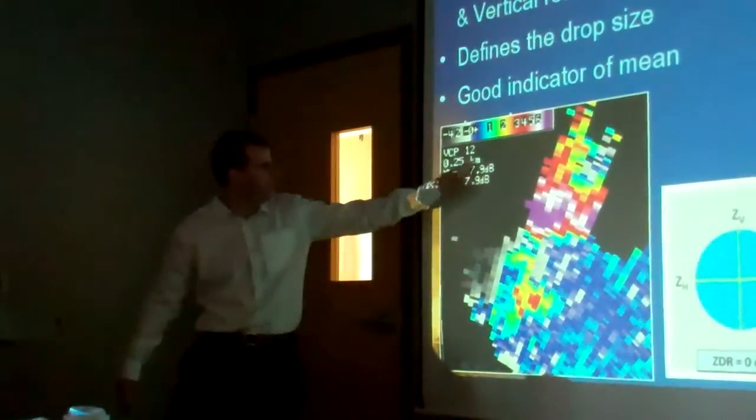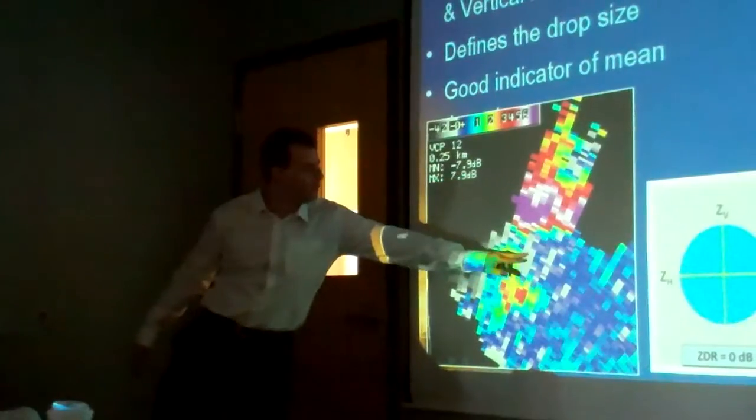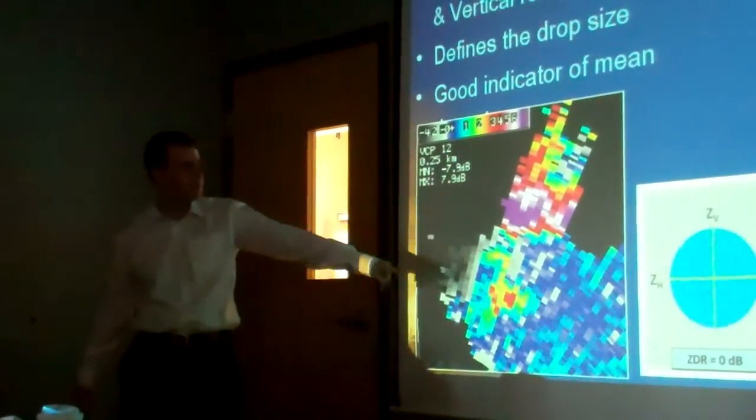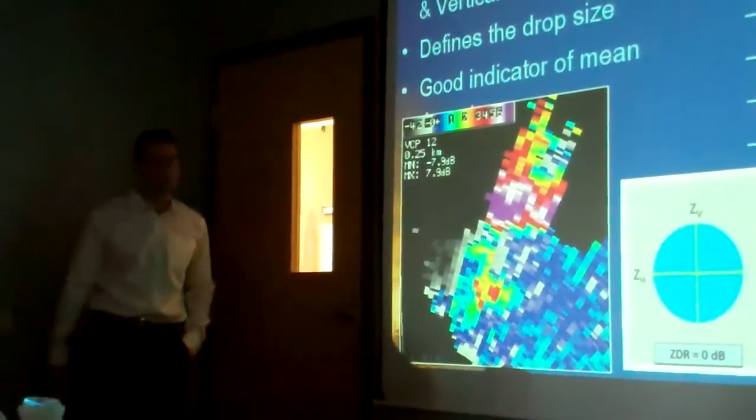But just looking at this roughly, you can see the ZDR seems to be close to zero in this area. So that's probably an indication of very large hail. And that's actually a hail spike, and we can talk about that in a few minutes.